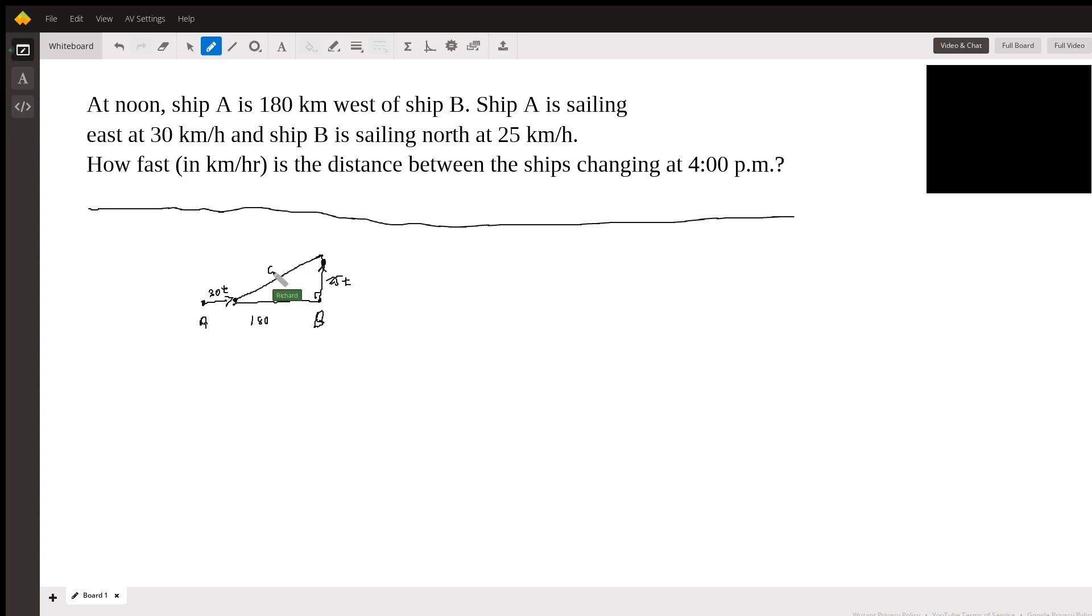And what we want, of course, is c, the hypotenuse, which is the distance between the two ships T hours after noon.